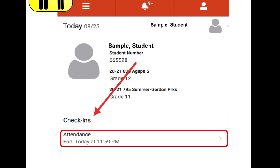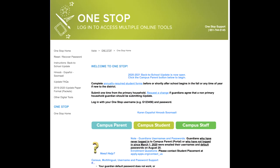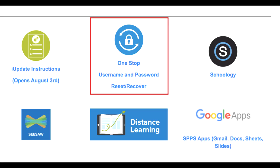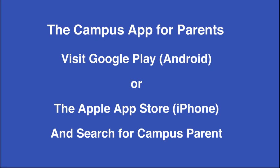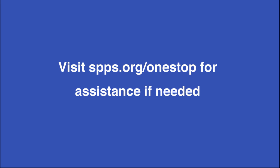If a parent needs help with a username or password, visit the website at spps.org/onestop and click on the Recovery button. Parents can also complete attendance using their smartphone by downloading the Campus Parent app at Google Play for Android phones or the Apple App Store for iPhones. Search for Campus Parent to find the app. For general assistance, visit spps.org/onestop.